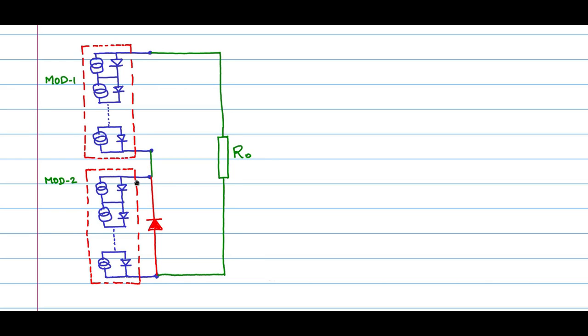We don't know which of the modules are having shading, so therefore you have to put this kind of protection bypass diode to every module which is there in the circuit. So you should also put a protection diode across module 1, as you see here.